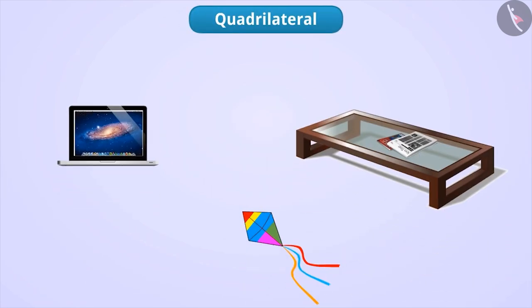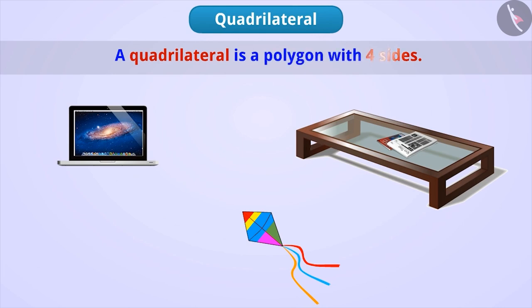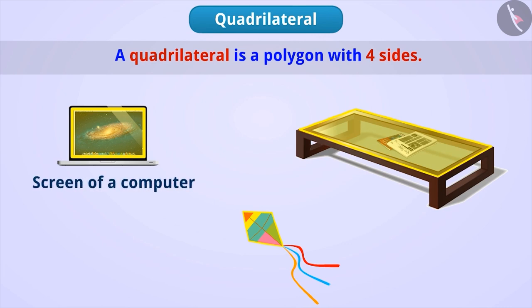Now let's learn about quadrilateral. A quadrilateral is a polygon with four sides. In our life, we see quadrilaterals in many objects such as computer screen, table, kite, etc.